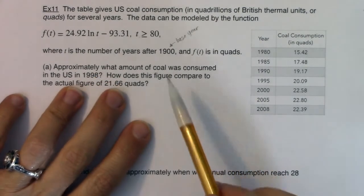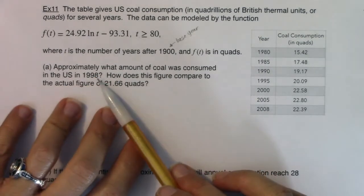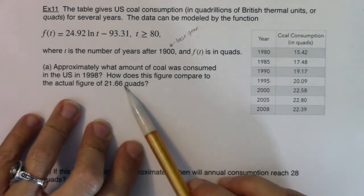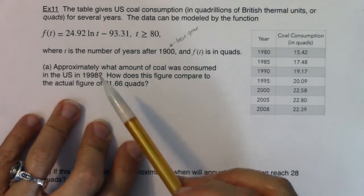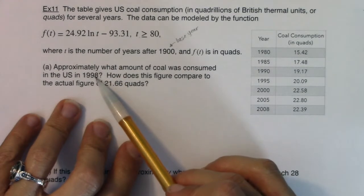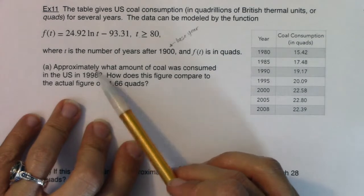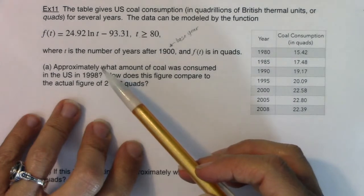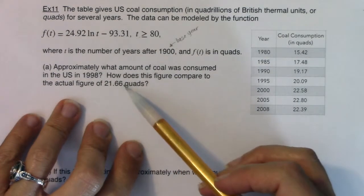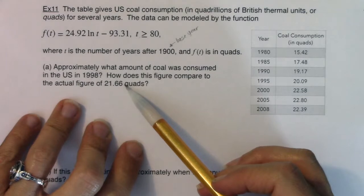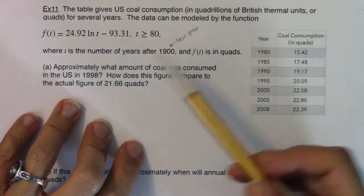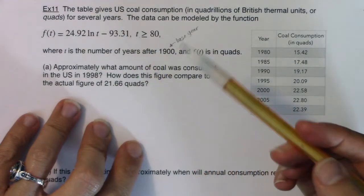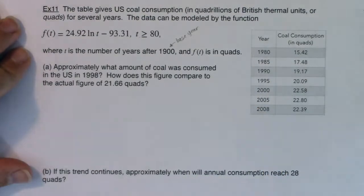It says approximately what amount of coal was consumed in the U.S. in 1998. How does this figure compare to the actual figure of 21.66 quads? So what I want to do is I see 1998, that's a time value, a year. So I want to plug that into my model and see what I predicted the coal consumption to be in 1998, and then I'm going to actually see how close I was to the actual number. Because now that 1998 has passed, we can see how good was this model doing? Was I close? Was I far away? Did I overestimate? Did I underestimate?